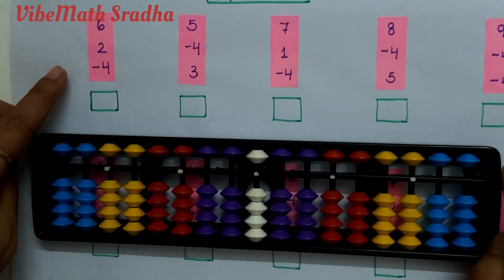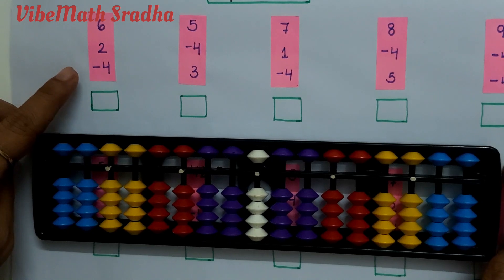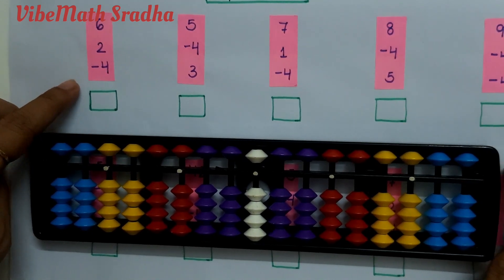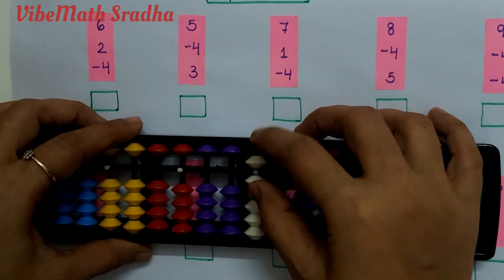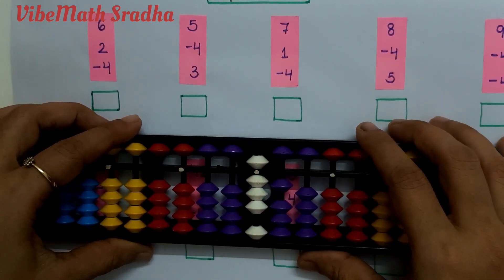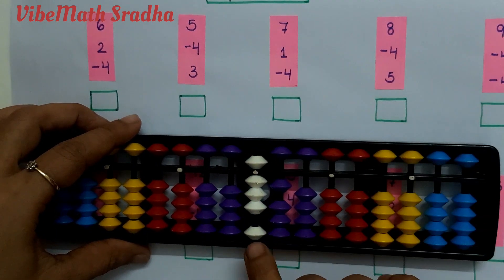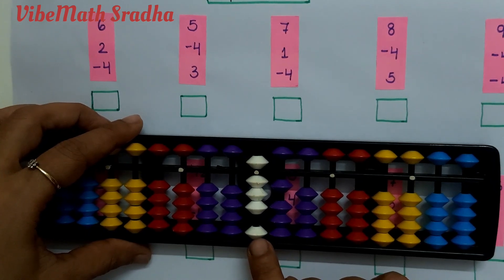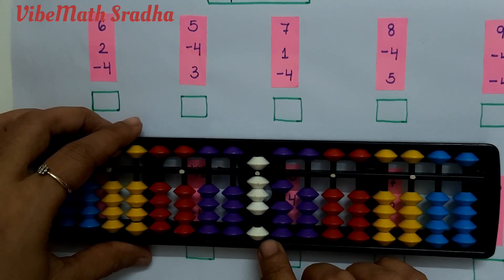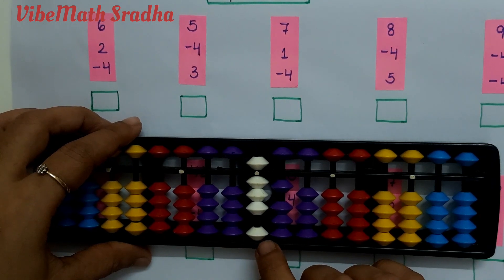Suppose we have this question: 6 plus 2 minus 4. Here we can subtract 3 directly, but we cannot subtract 4 directly. In this situation we have to apply one small friend subtraction formula.